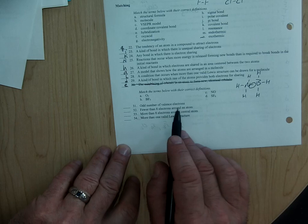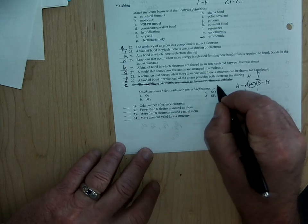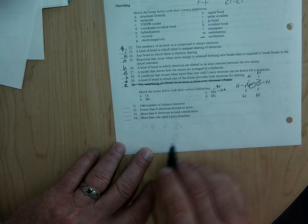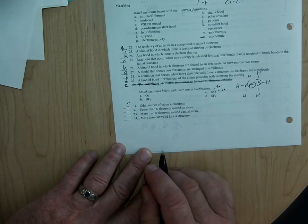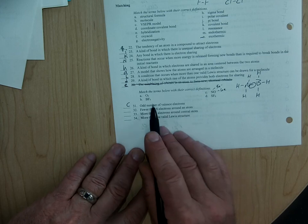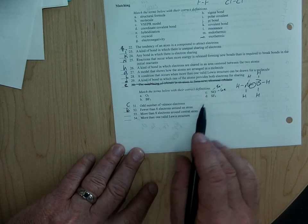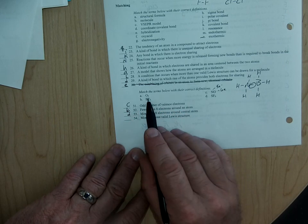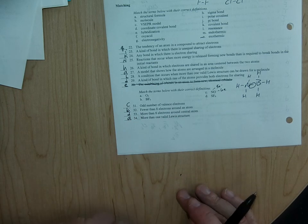Which one of these has an odd number of valence electrons? If you look at this one, nitrogen has five electrons available for bonding, oxygen has six, that's 11, which is an odd number, so that would be C. The one that has less than eight electrons around its central atom is B, BF3. More than eight electrons around it would be D. And then more than one valid Lewis structure, that's ozone, or A, and we'll get to that a little bit later.